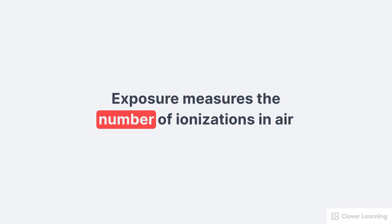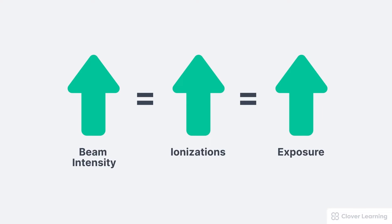So why do we care about this? It's really hard to count the number of photons in air, but we can count the number of ionizations in air. And that's why exposure is used to measure the x-ray beam intensity. If we do anything that increases the intensity of the x-ray beam, this is going to create more ionizations in air. Since we can't count individual photons, we can count the ionizations, and when we do that, we're measuring an increase in exposure. The number of ionizations is directly proportional to the number of photons in the x-ray beam, so if the intensity increases, the measured exposure also increases.